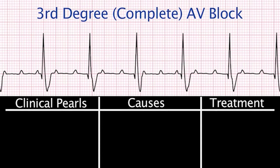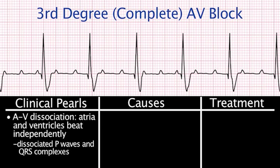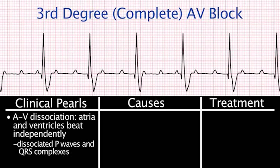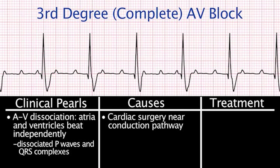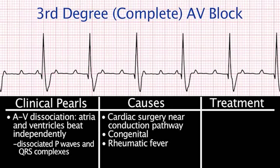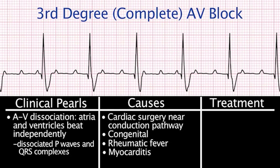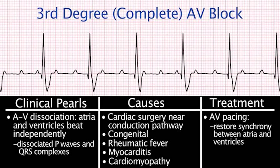Third-degree or complete AV block involves AV dissociation, where the atria and ventricles are entirely independent of one another. There is no P wave before each QRS complex, or the PR interval is too short for the P wave to be associated with a QRS complex, and there are more P waves than QRS complexes. Causes include cardiac surgical procedures near the conduction pathway, congenital complete AV block, rheumatic fever, myocarditis, or cardiomyopathy. Treatment includes AV pacing to restore synchrony between the atria and the ventricles.